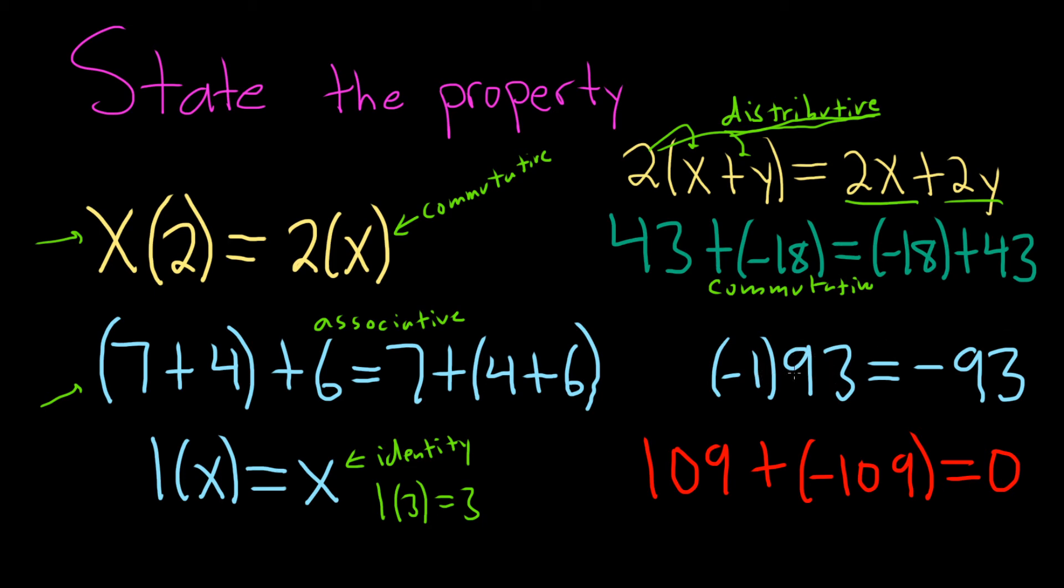This one here, negative 1 times 93 equals negative 93. This is called the multiplication property of negative 1. Basically, when you multiply a negative number times a positive number, the number turns negative. So negative 1 times 93 is negative 93.